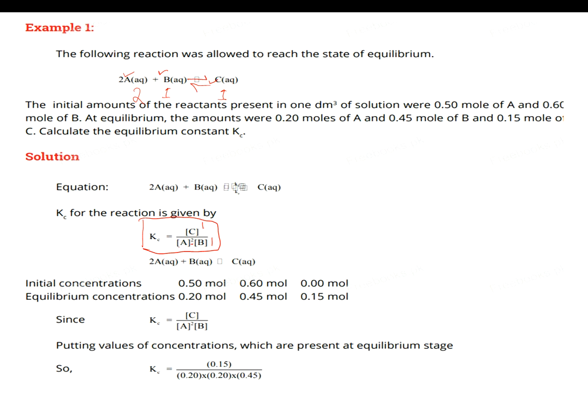This is the Kc expression which is in the statement. The initial amounts of the reactants present in one cubic decimeter of solution were 0.50 mole of A and 0.60 mole of B. At equilibrium, the amounts were 0.20 moles of A, 0.45 moles of B, and 0.15 moles of C. Calculate the equilibrium constant. Initial concentrations are given: chemical A is 0.50, chemical B is 0.60, and initially there was no C. But at equilibrium you have 0.20 mole of A, 0.45 mole of B, and 0.15 mole of C.